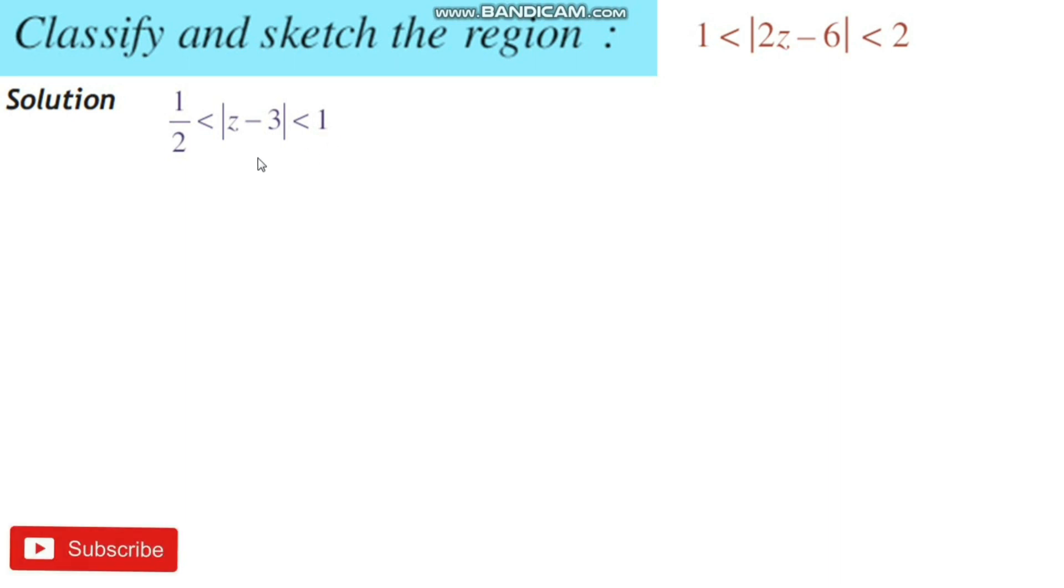All of us are familiar with the complex variable z, it is in the form x plus iy. Now z can be replaced with x plus iy. We have 1/2 less than modulus of this complex number. It is in the form real and imaginary parts: (x minus 3) plus iy. Here x minus 3 is the real part, y is the imaginary part, less than 1.